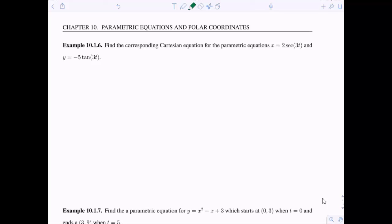Find the corresponding Cartesian equation for the parametric equations x equals 2 secant of 3t and y equals negative 5 tangent of 3t. Now we don't have to plot these, we just want to figure out the corresponding Cartesian equation. Again, just like last time, we should be thinking about sine squared u plus cosine squared u equals 1. There was a way to divide by cosine squared and we can relate secants with tangents. This is true for any u, so I'm going to plug in 3t.